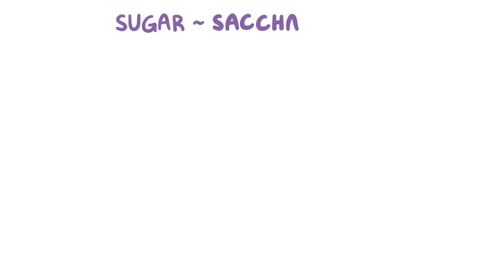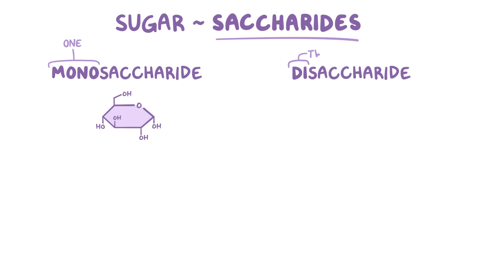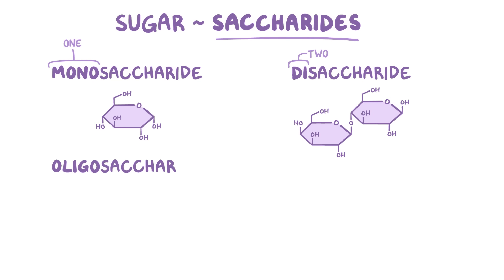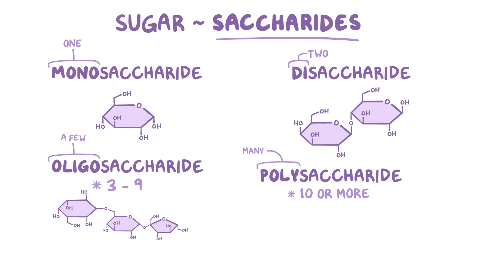Sugar actually refers to a family of molecules called saccharides. Monosaccharides, where mono means one, so one sugar molecule. Disaccharides, where di means two, so two sugar molecules linked together. Oligosaccharides, where oligo means a few, so it's three to nine sugar molecules linked together. Polysaccharides, where poly means many, so it's ten or more sugar molecules linked together.